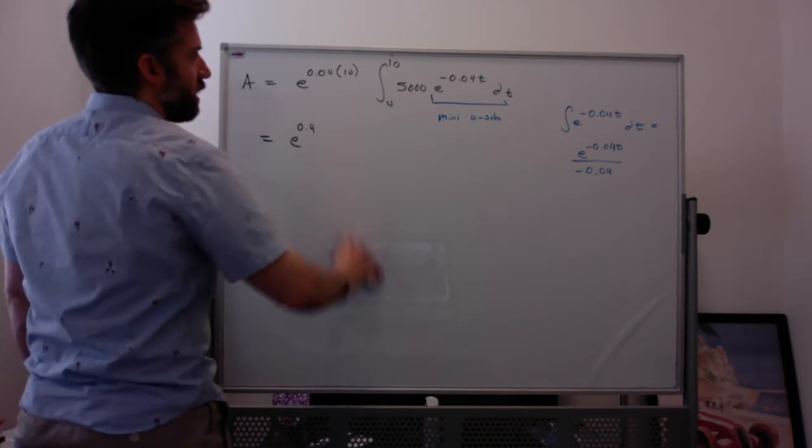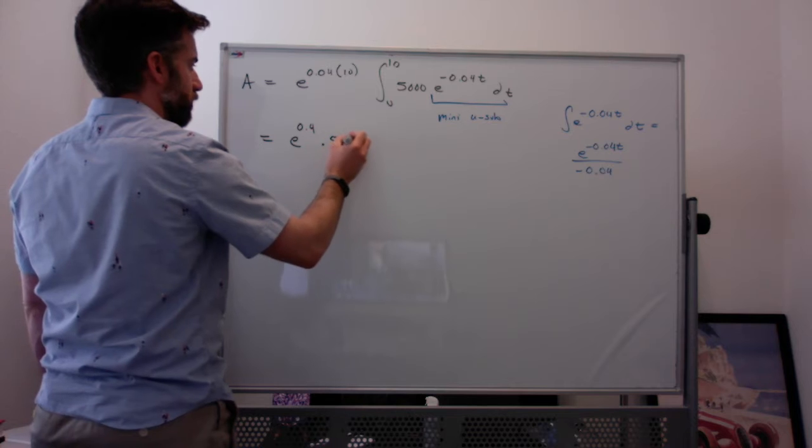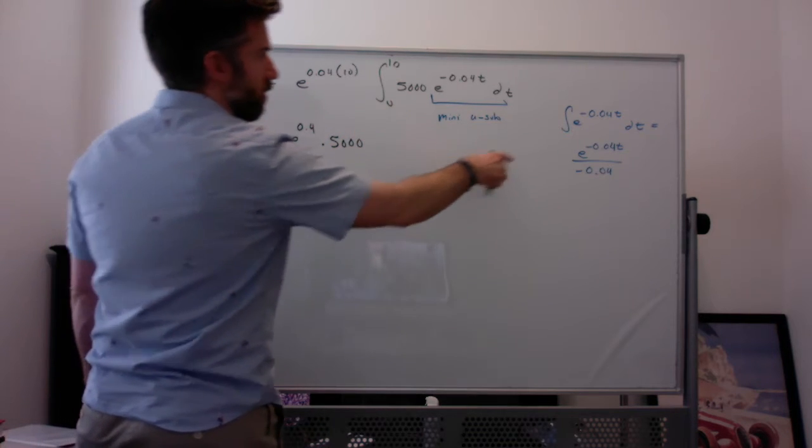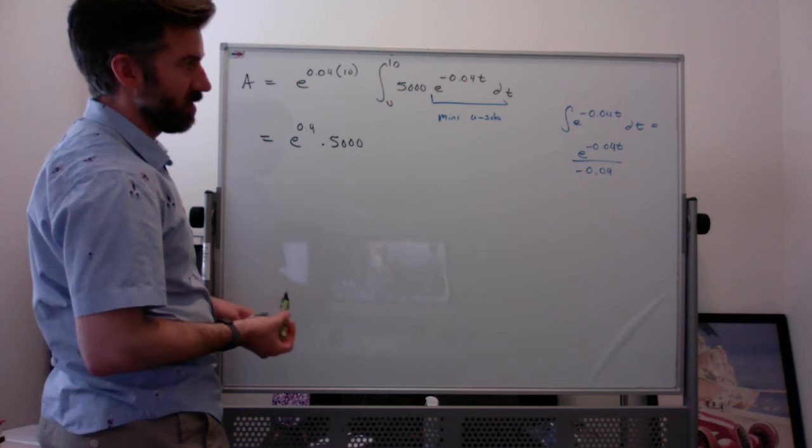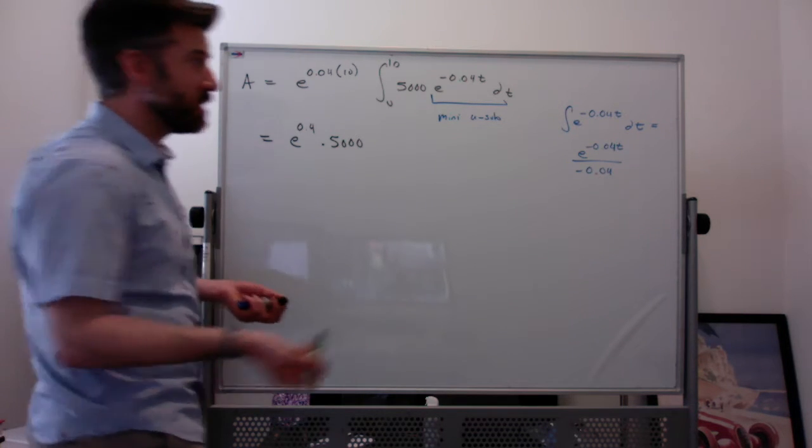So the integral of E to the negative 0.04t, I can bring this 5000 out. And then this integral of E to the negative 0.04t is just E to the negative 0.04t divided by negative 0.04. This is exactly one of those mini substitutions.